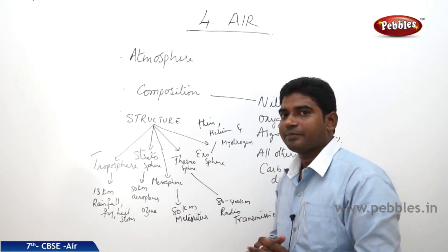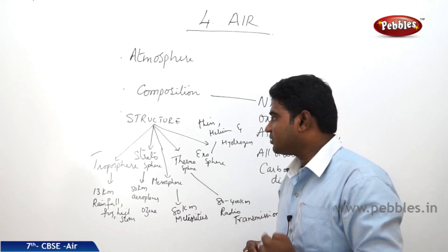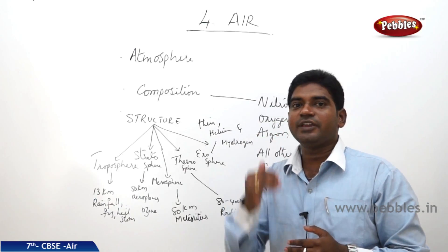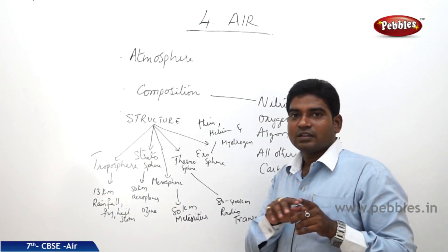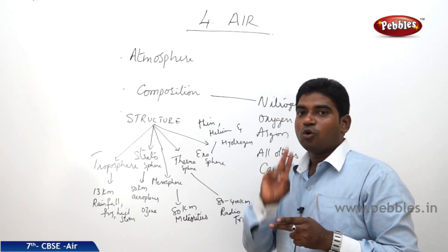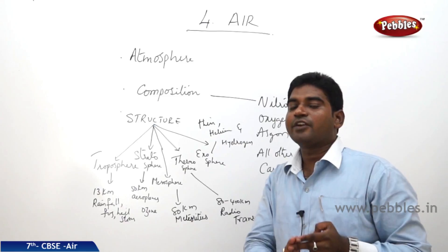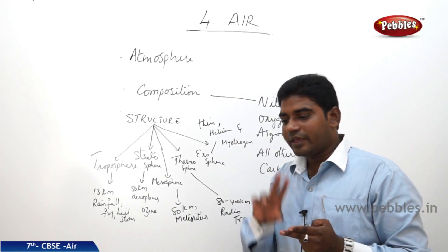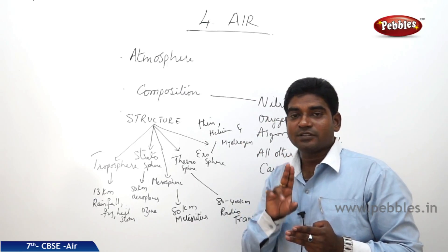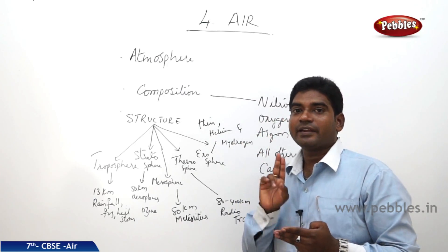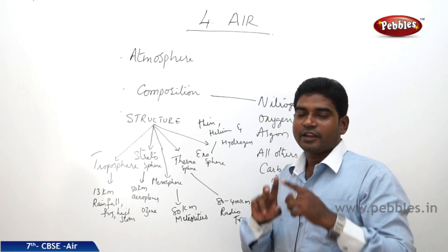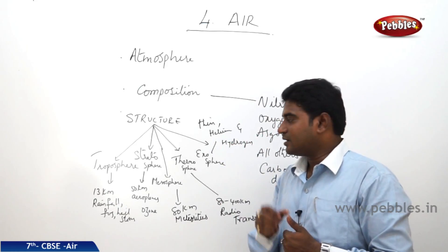Moving to the second layer — the stratosphere. The stratosphere extends up to 50 kilometers. Here, the airplanes travel in this layer. Another important thing is the ozone layer, which is present in the stratosphere. The ozone layer protects us from harmful sun rays — specifically the ultraviolet rays released from the sun — and safeguards human life.